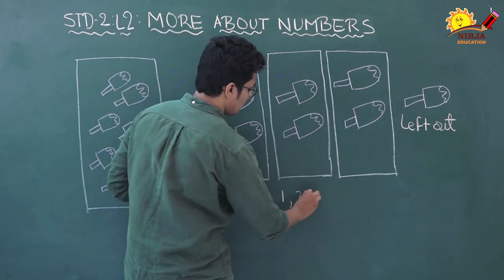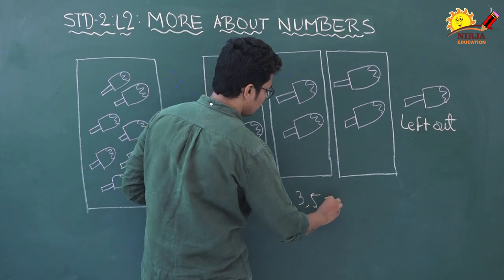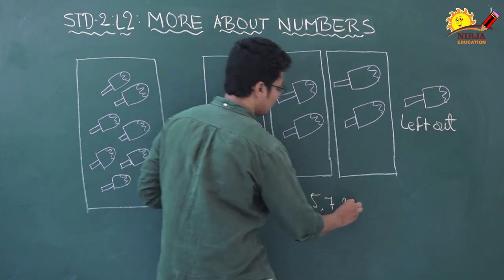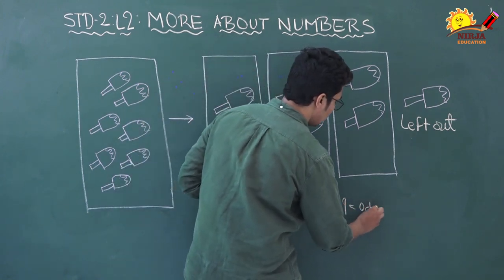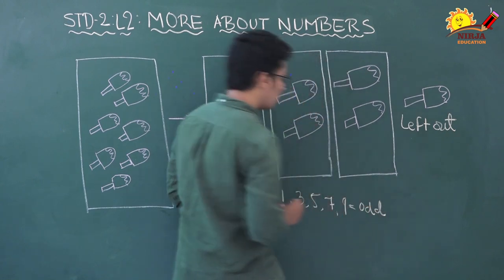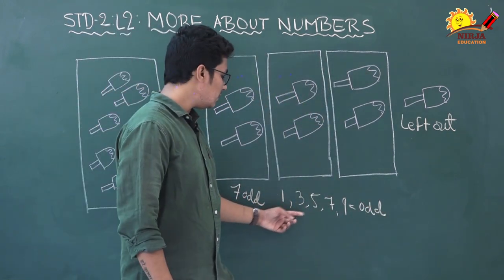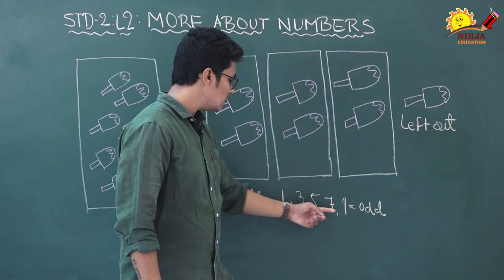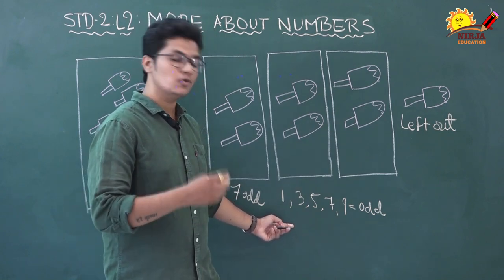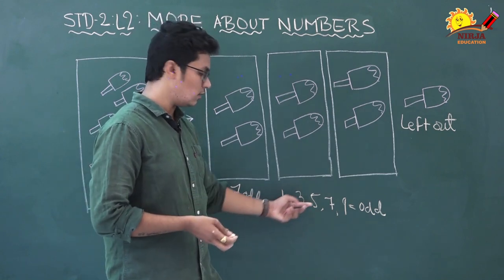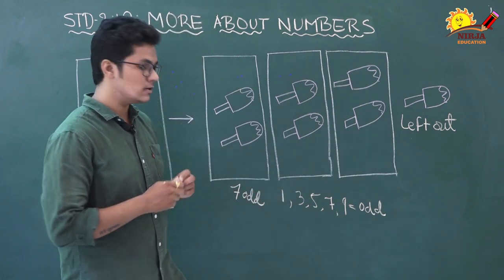The numbers that cannot be put in pairs are called odd numbers. So one, three, five, seven, and nine — these numbers are odd numbers. And whatever number has these digits in their ones place, those numbers are also odd numbers.